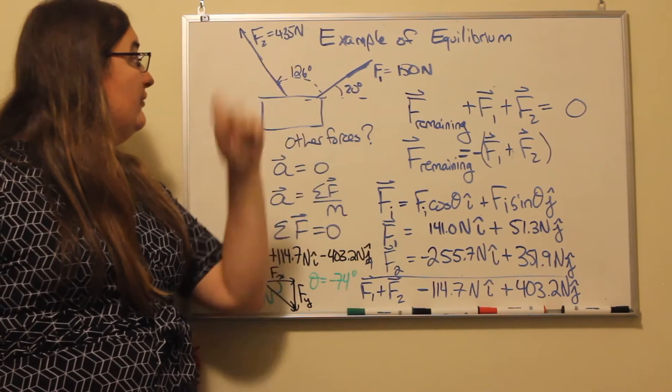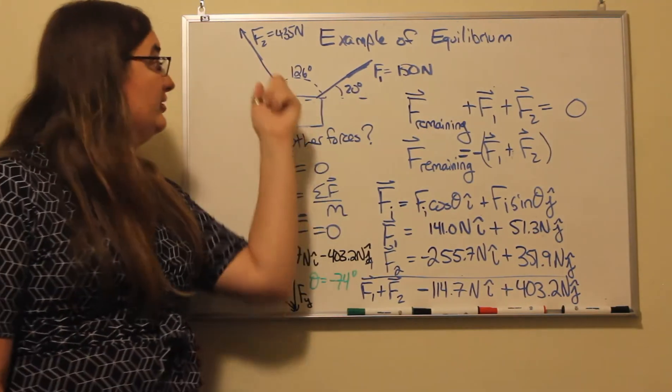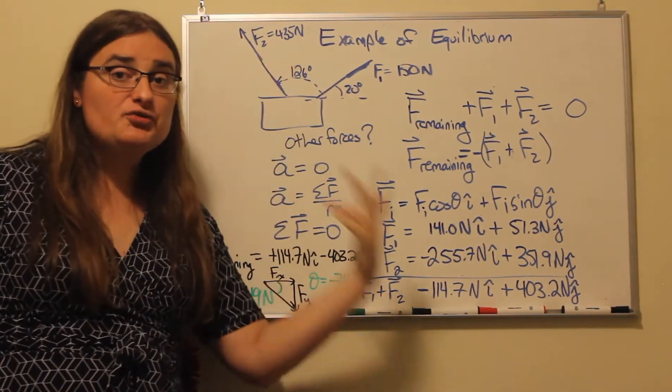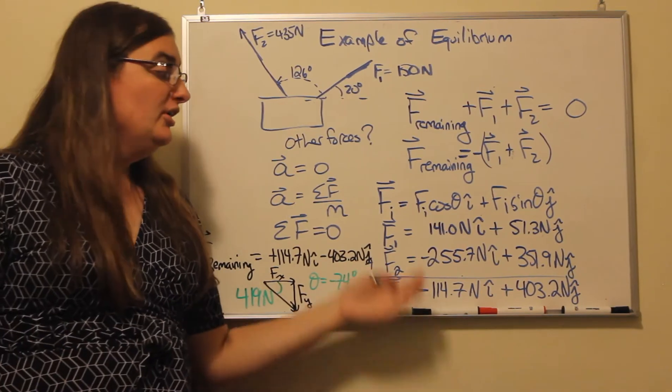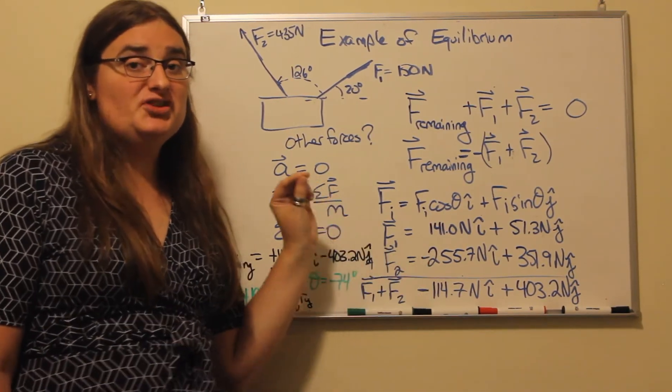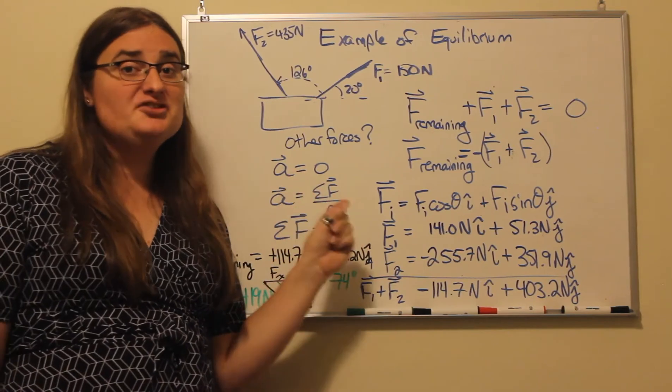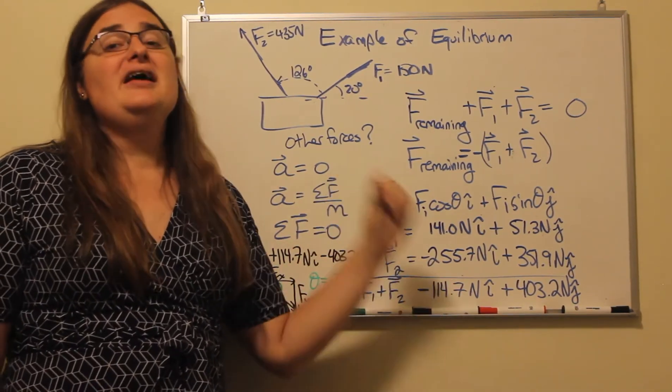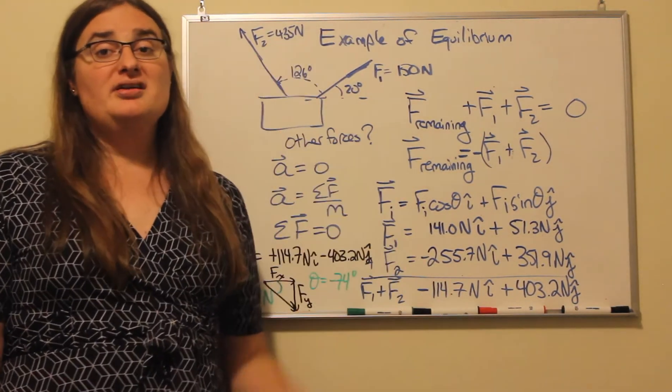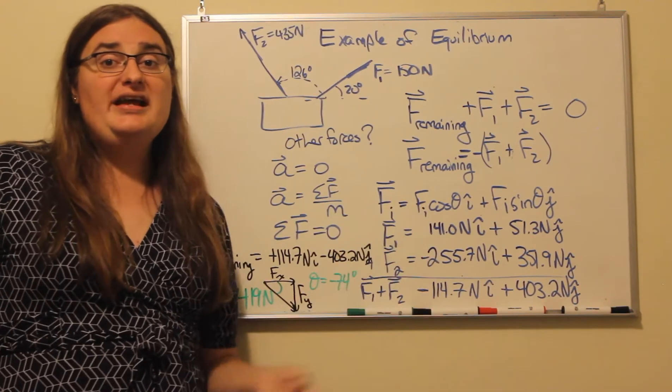I would do the same thing with force two. The magnitude of force two is 435 newtons, so I have 435 newtons times the cosine of 126 degrees. And because we're over 90 degrees, we get a negative sign. So we have 255.7 newtons in the negative i hat direction, negative x.